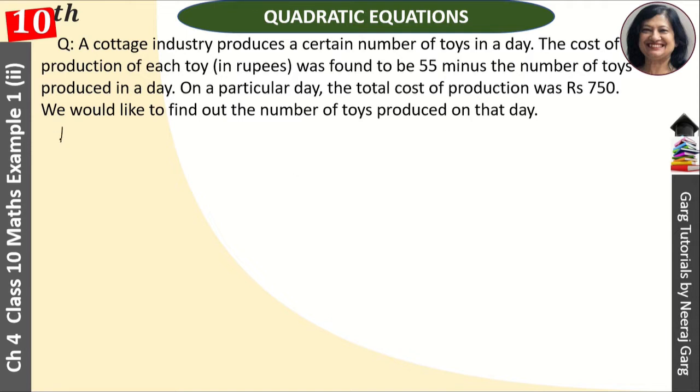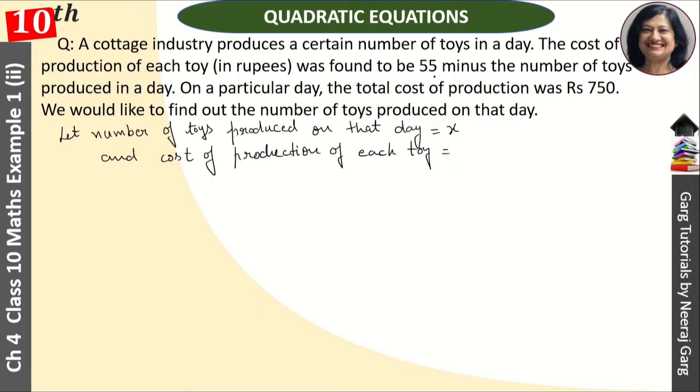So what do we do in this? Let number of toys produced on that day equal x, and cost of production of each toy is equal to 55 minus the number of toys.